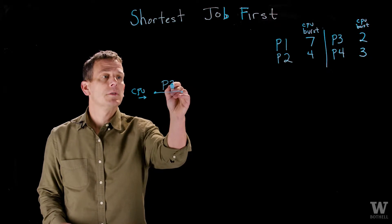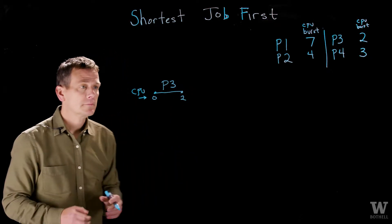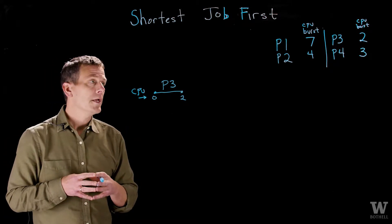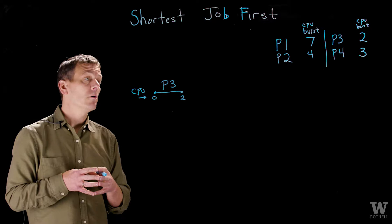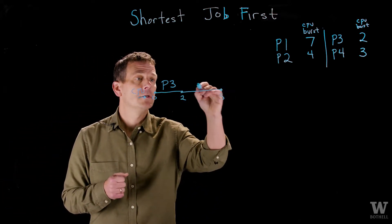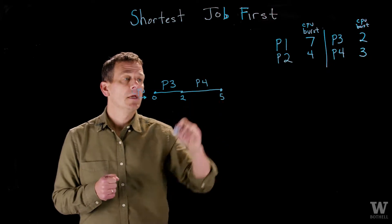Process 3 will get the CPU until time 2. Great. Process 3 is done. Who will run next? Looks like P4 only requires three CPU units, so we'll run P4 next until time 5 and so on.